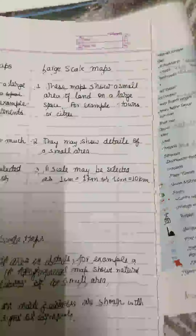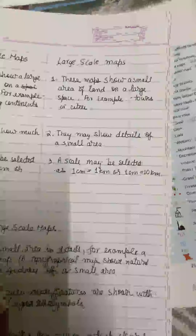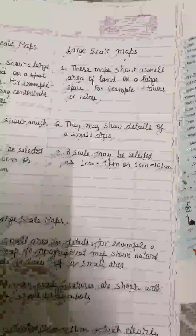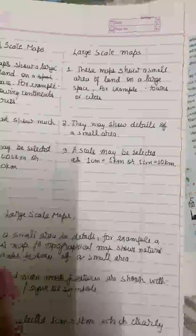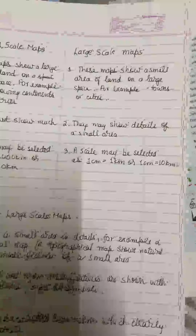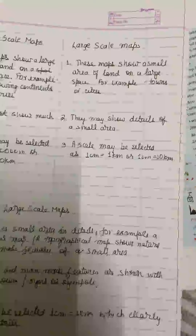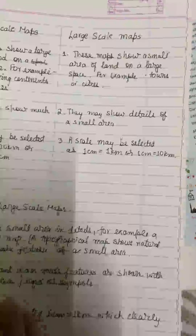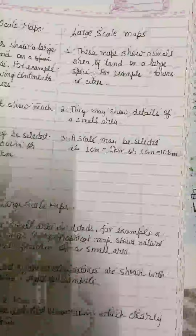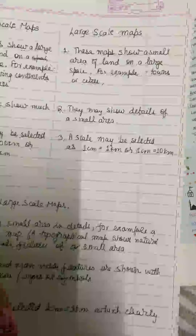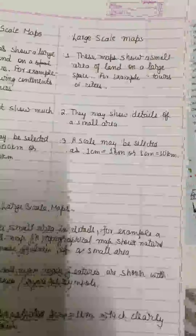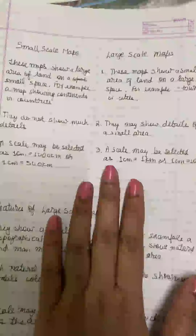Just the opposite is a large scale map. While a small scale map shows a large area, a large scale map always focuses on a small area — it may show a town, a city, or a colony. Naturally, if it is focusing on a smaller area, it will give us a lot of details. And since I am showing a small area, I can assume smaller distances like one centimeter equals one kilometer or one centimeter equals ten kilometers.